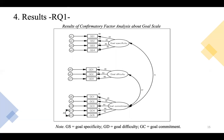I conducted confirmatory factor analysis on the goal scale in order to test construct validity. The figure shows results using four items for goal specificity, three items for goal difficulty, and five items for goal commitment. However, the path coefficient between goal specificity and goal difficulty was not significant, so that path was removed and re-analyzed. Besides, the fourth and fifth items of goal commitment were considered similar in terms of not being aware of one's own progress, so I figured there was a correlation between those two items.